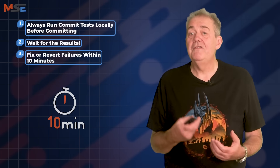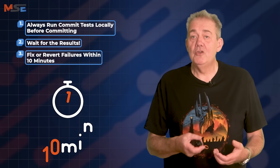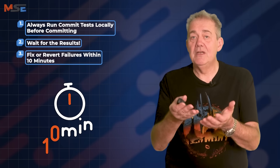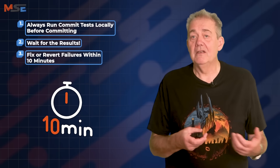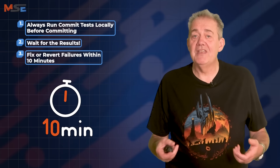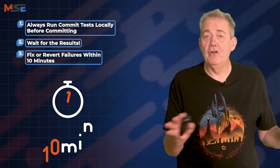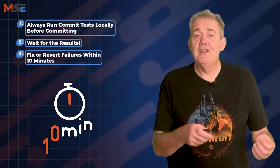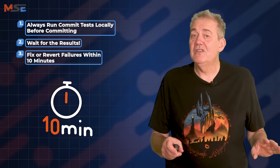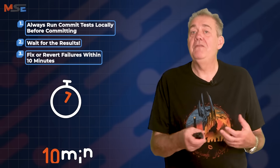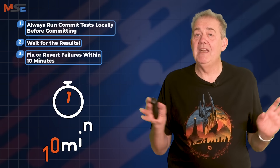Rule three: fix or revert failures within 10 minutes. Failures happen, and when they do, act immediately. You should be the first person to see a failure that you introduced and fix it immediately. I recommend that you start a clock as soon as you see the failure and allow yourself 10 minutes to either fix the problem or revert the change. Don't block the pipeline for hours or leave others stuck waiting. Small, frequent commits make it much easier to understand the cause of the problem, and so most of the time you can fix it within that 10-minute window. But if you can't, revert the change and look into it in slower time without being in anybody else's way.